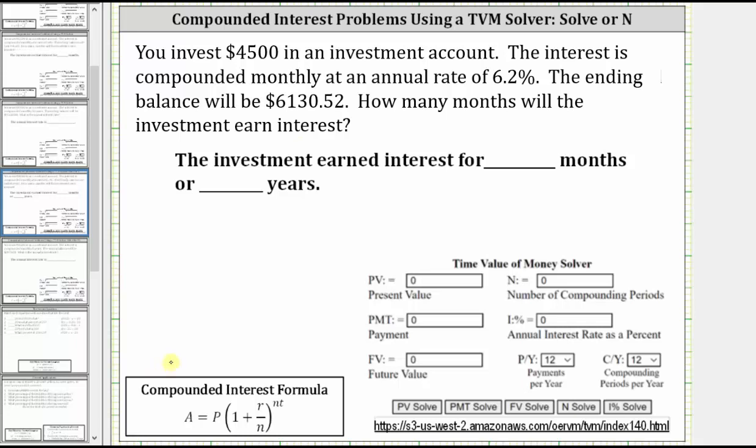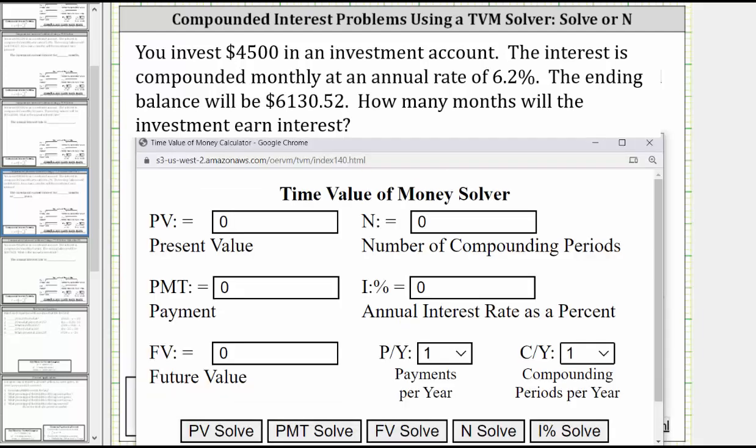We will answer this compound interest problem using the time value of money solver. To begin, because you invest $4,500 or you pay this amount into the account, the present value is negative 4,500.